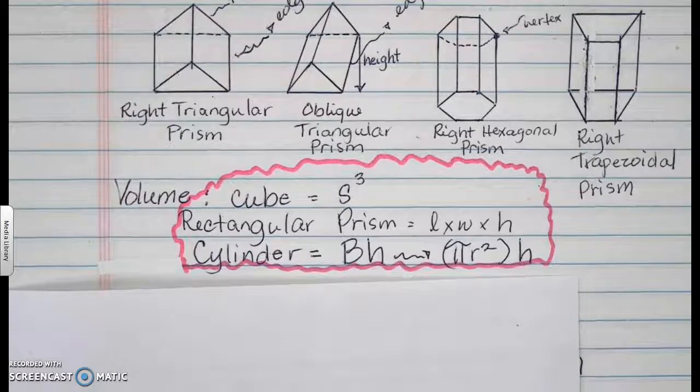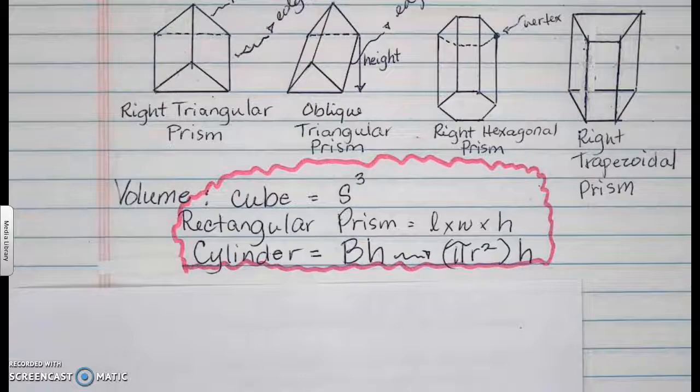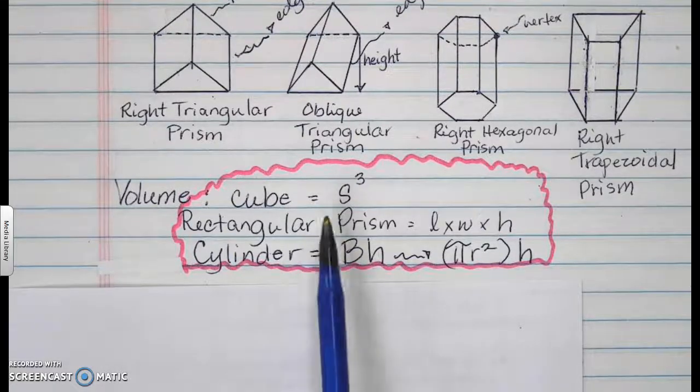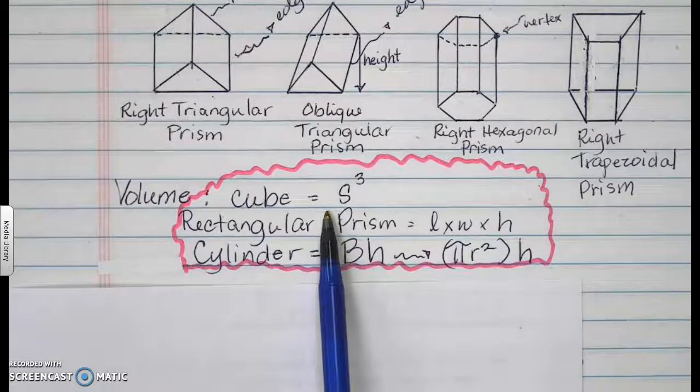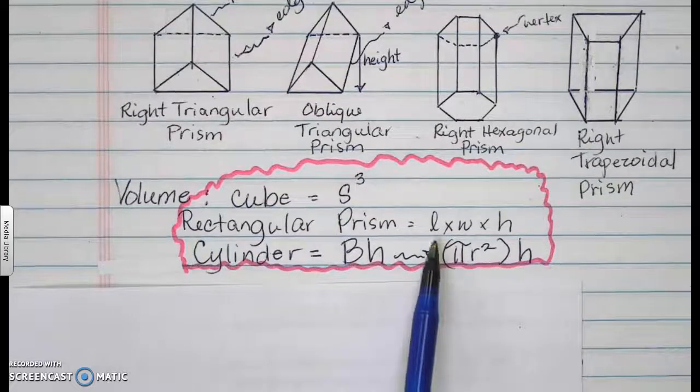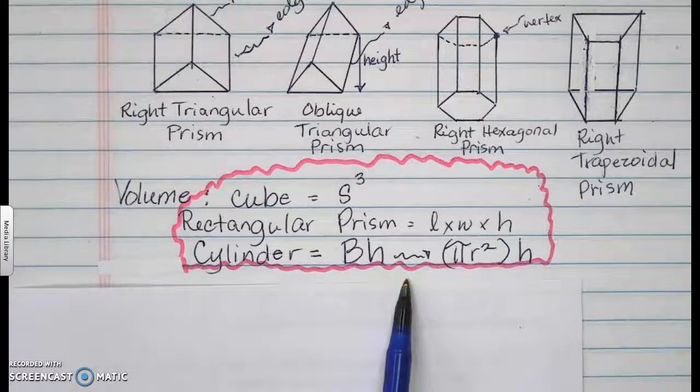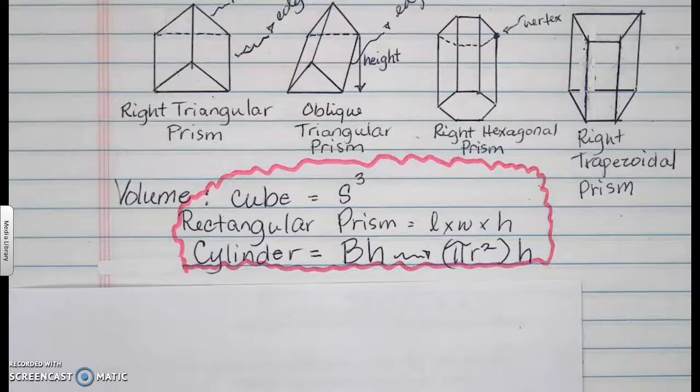It might be helpful to memorize some of the basic formulas for volume, such as that of a cube, which is s to the third power. Side times side times side. A rectangular prism is given as length times width times height, and a cylinder is pi r squared times the height of your cylinder.